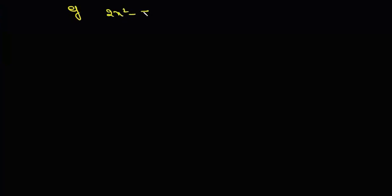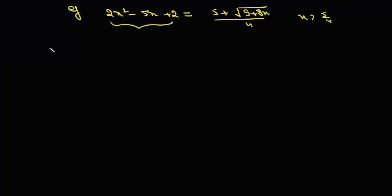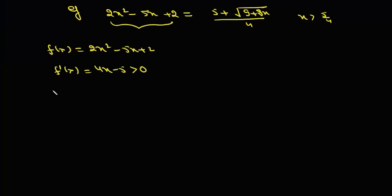Let us take another example. Suppose we need to solve 2x squared minus 5x plus 2 equals 5 plus under root of (9 plus 8x) divided by 4, when x is greater than 5 by 4. If f(x) equals 2x squared minus 5x plus 2, then f dash x equals 4x minus 5, and when x is greater than 5 by 4 it is greater than 0, so this function is monotonically increasing.